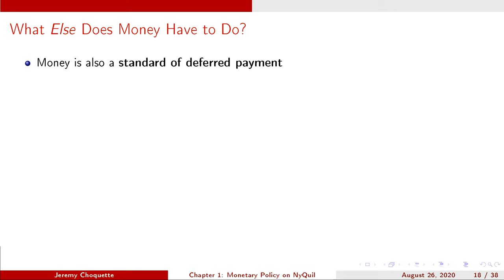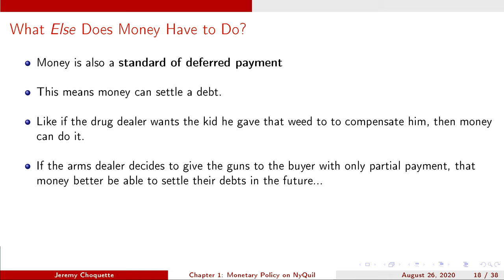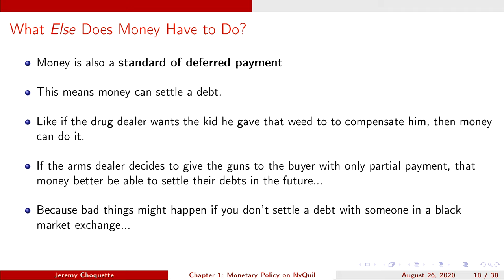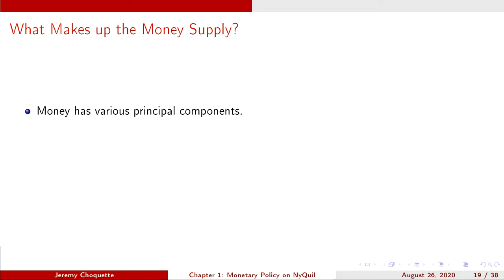The last thing money has to be is a standard of deferred payment, meaning money can settle a debt. If someone gave partial payment for goods, that money better be able to settle their debts in the future. This is especially important in any transaction where you can't easily bring in legal enforcement to resolve a payment dispute — you need money to reliably fulfill that role. So those are the four functions of money. Now let's talk about what makes up the money supply.